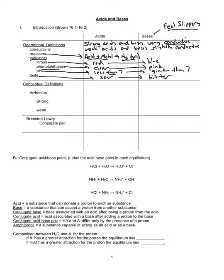Acids have a pH less than 7. Bases have a pH greater than 7. Acidic things tend to have a sour taste, like citric acid — lemons, oranges, grapefruit, citric fruits.